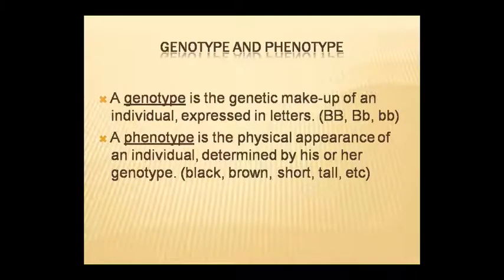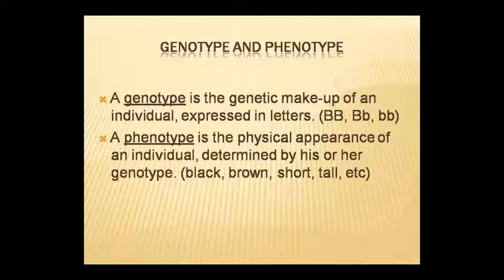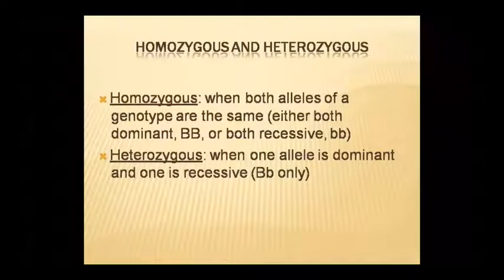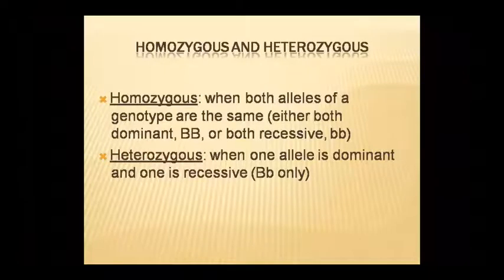Genotype is the genetic makeup of an individual, expressed in letters — such as BB (homozygous dominant), Bb (heterozygous), or bb (homozygous recessive). Phenotype is the physical appearance of an individual, determined by genotype — like black color, brown color, short, or tall. Homozygous means both alleles are the same (either both dominant like BB, or both recessive like bb). Heterozygous means one dominant and one recessive allele (Bb).